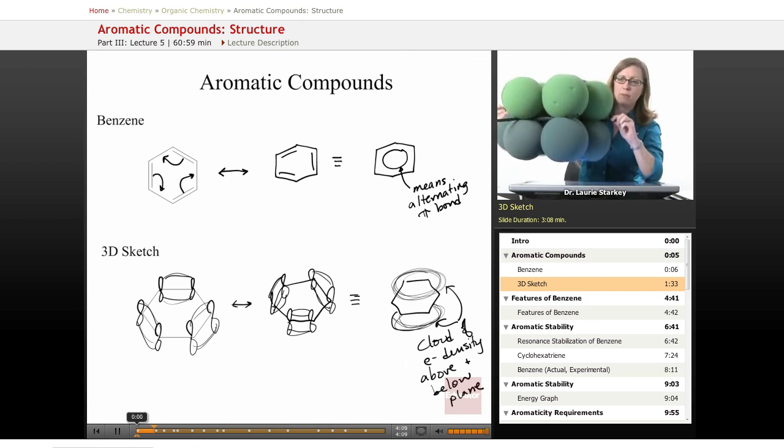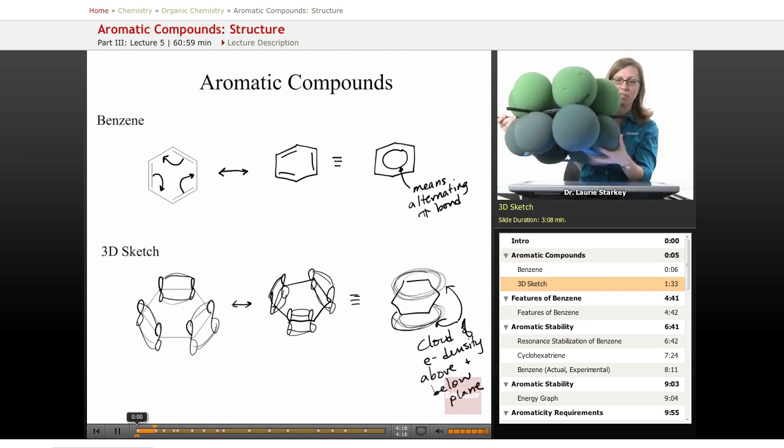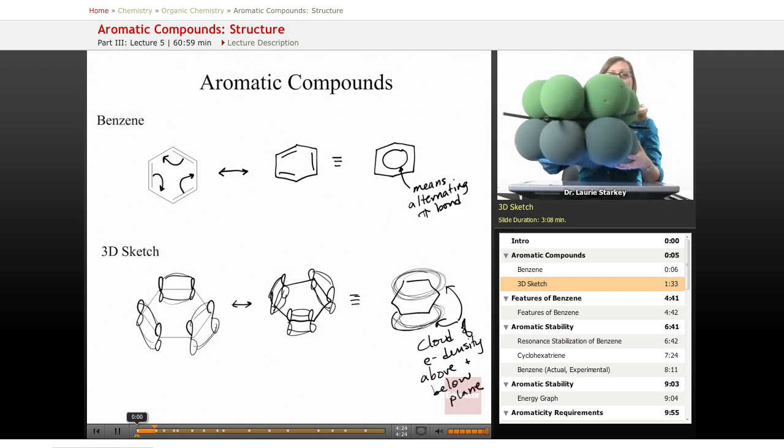We also have a hydrogen pointing straight out. That's in the plane of the molecule. And when we have this kind of space filling model of what a p orbital looks like, you can really see how the p orbital on each adjacent carbon is touching and overlapping and interacting and sharing its electrons.